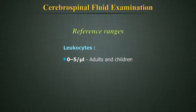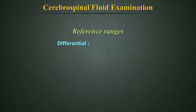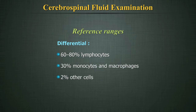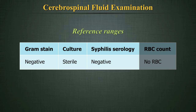Normal CSF reference values: Leucocytes 0-5 per microlitre in adults and children, up to 30 per microlitre in newborns. Differential counts: 60-80% lymphocytes, up to 30% monocytes and macrophages, other cells 2% or less. Monocytes and macrophages are somewhat higher in neonates. Gram stain should be negative, culture should be sterile, and syphilis serology should be negative. Normally there are no red blood cells in CSF unless the needle passes through a blood vessel en route.